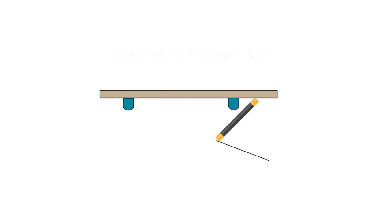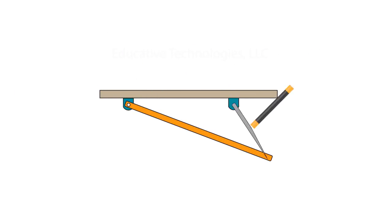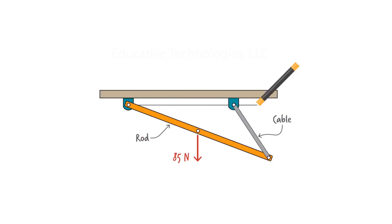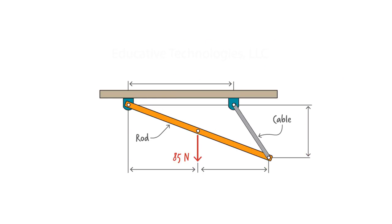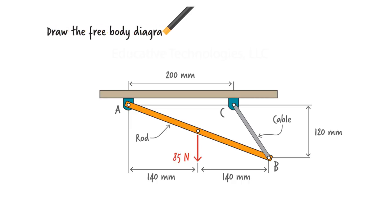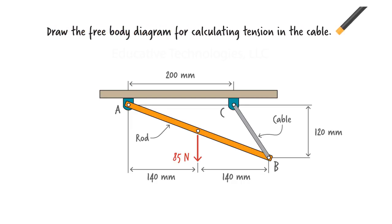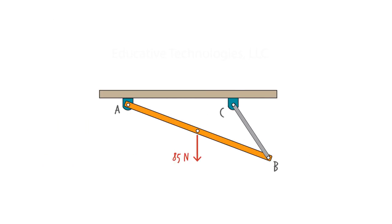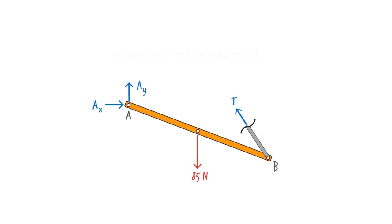Now consider this rod. It is pinned to a fixed surface at one end and attached to a cable at the other end. The rod carries a downward force of 85 newtons, and we want to determine the tension force that develops in the cable as a result of the applied load. Since we want to determine the internal force in the cable, we are going to cut through the cable and through the pin at A in order to isolate the rod. This exposes the internal forces at A as well as the internal force in the cable.